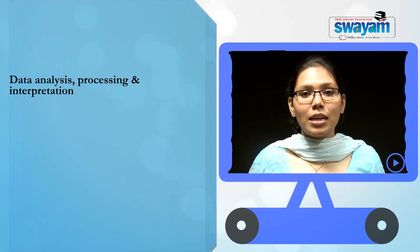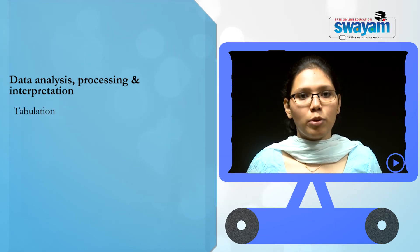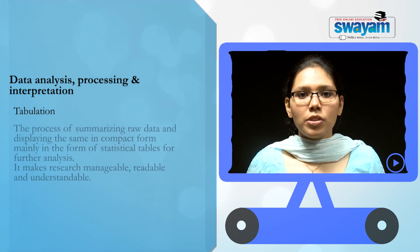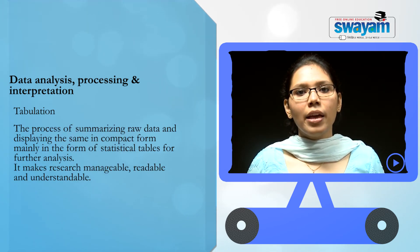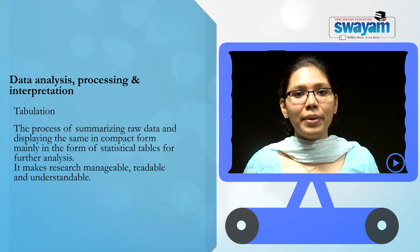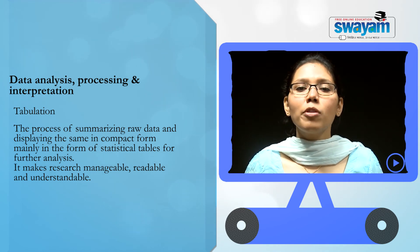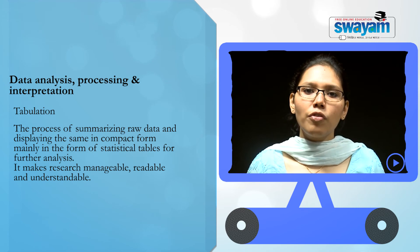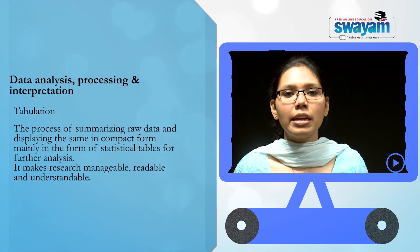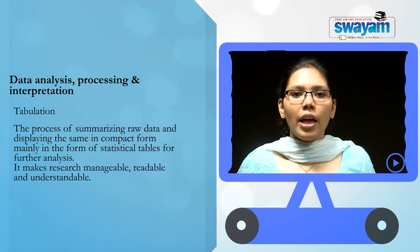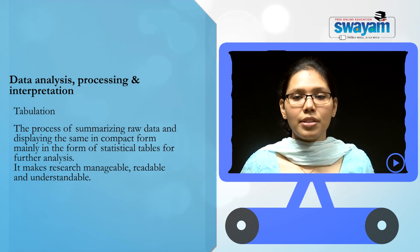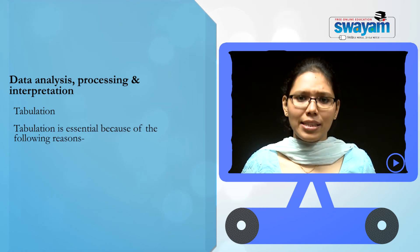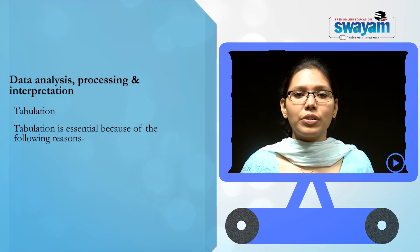The fourth step under data processing is tabulation. The process of summarizing raw data and displaying the same in compact form, mainly in the form of statistical tables for further analysis, is known as tabulation. It makes research manageable, readable, and understandable. Now, tabulation is essential because of the following reasons.